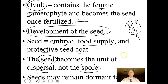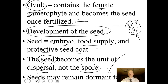Seeds can be dormant for hundreds of years. We have major seed banks all across the world where seeds are stored in vaults dug into the sides of mountains, so that if something happens — an asteroid strike, viral or bacterial infection that kills all the plants — we have a bank of seeds to restart agriculture.